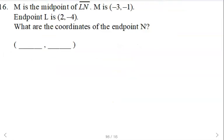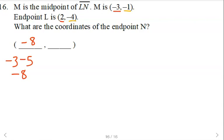This time we have the midpoint and one of the endpoints. One way to think through this: going from the endpoint of 2 to negative 3, we travel left 5. If we travel left 5 more, negative 3 minus 5 is negative 8. For the y-coordinates: starting at negative 4, going to negative 1, we went up 3. Going up 3 more, negative 1 plus 3 is 2. So that's one way of thinking through it; the other way is to use the formula.